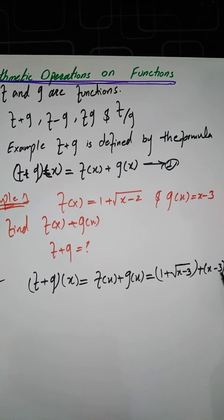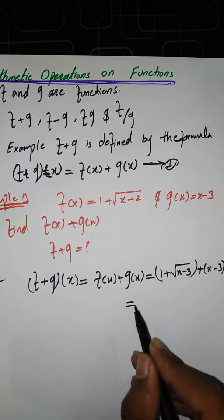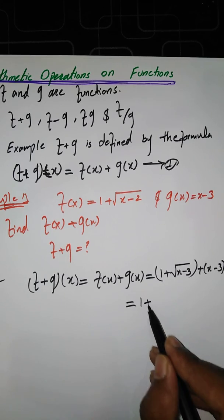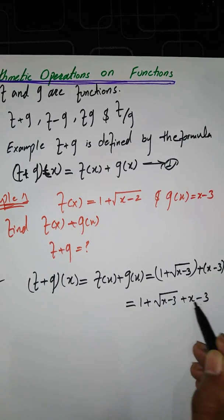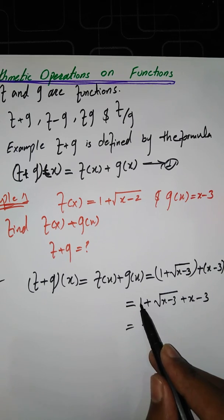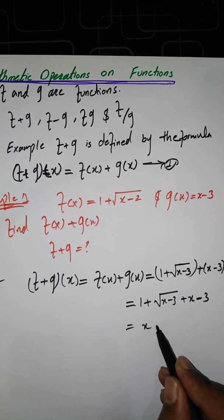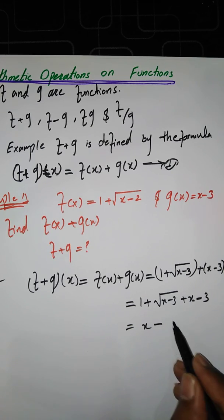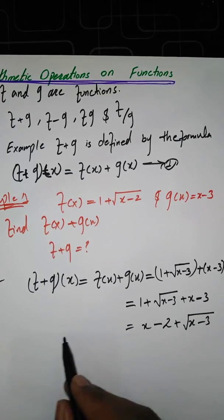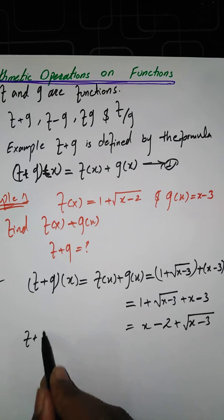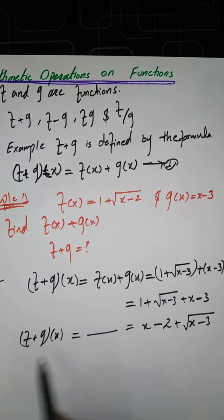After simplification, opening the brackets and combining constant terms: minus 3 plus 1 gives minus 2. So (F+G)(x) equals square root of (x minus 2) plus x minus 2. That is the answer for F plus G of x.